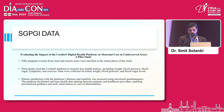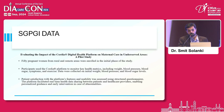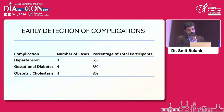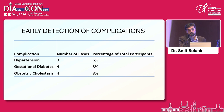This is the data from our pilot study conducted at SGPGI Lucknow. 50 pregnant women from rural and remote areas were enrolled in the initial phase. Participants used the Chordia platform to monitor key health metrics including weight, blood pressure, blood sugar, symptoms, and exercise. We were able to achieve early detection of complications: three cases of hypertension, four cases of GDM, and four cases of obstetric cholestasis were detected via proper follow-up and patient compliance through this platform.